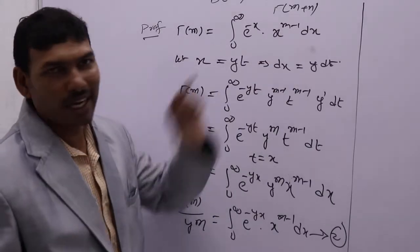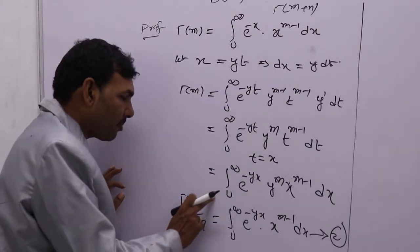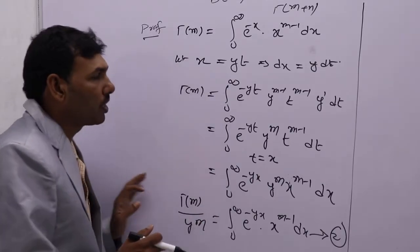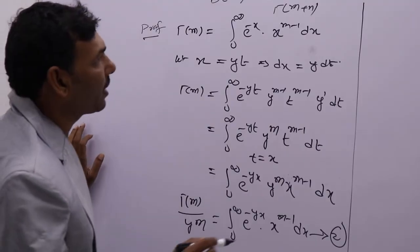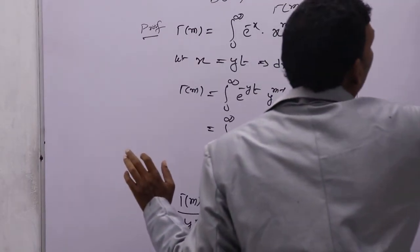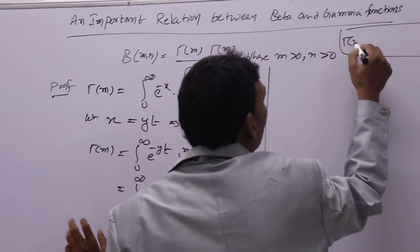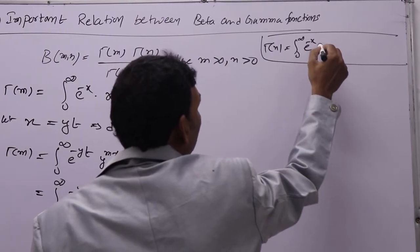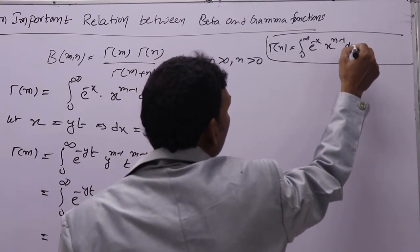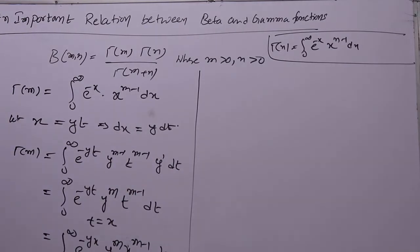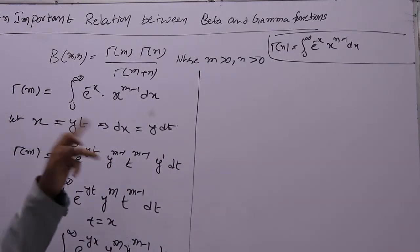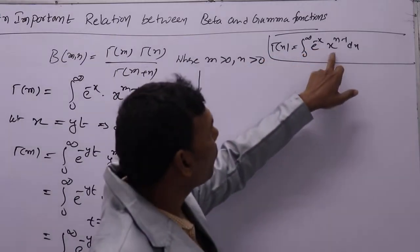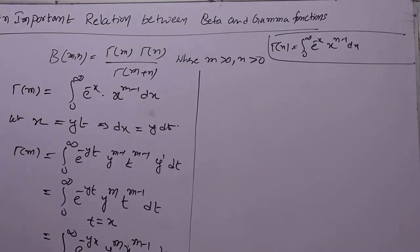Gamma(n) means integral 0 to infinity of e to the power minus x into x to the power n minus 1. We need to get y power n minus 1. How will you get y power n minus 1? To get gamma(n) in terms of y, we need e to the power minus y into y power n minus 1; then we can write gamma(n).